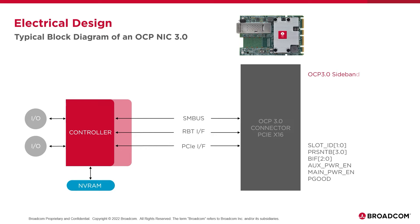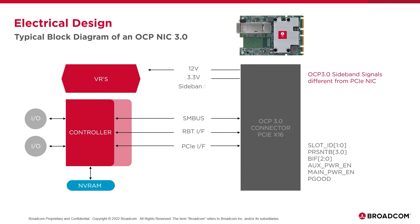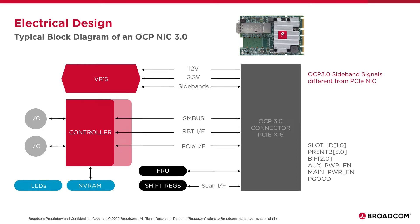This allows an OCP 3.0 NIC to support various personalities and configure itself dynamically based on signals driven by the host server. An example of this would be in a multi-host server application where the NIC can actually be shared by more than one host. For example, if a server chassis held two independent servers, the chassis could indicate to the NIC via the BIF pins that it wants the NIC to split the 16 PCIe lanes into two sets of eight, routing each to a separate host. Broadcom's NIC firmware would then support this personality and allow two hosts to connect and share the total bandwidth.